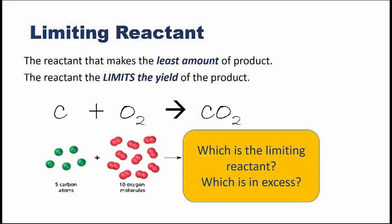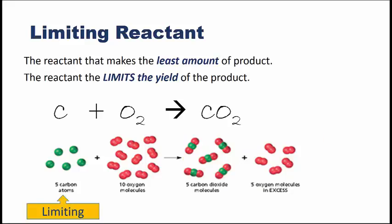If we were given these amounts here, let's say we had 5 carbon atoms reacting with 10 oxygen molecules, which of these 2 reactants would be the limiting reactant and which would be in excess? If you look at this for a moment, you'll see that we have 5 carbon atoms and we have double the amount of oxygen molecules. So each one of these carbon atoms will combine with 1 molecule of oxygen to form 1 molecule of carbon dioxide gas. So if we only have 5 carbon atoms and we have 10 oxygen molecules, that makes carbon the limiting reactant.